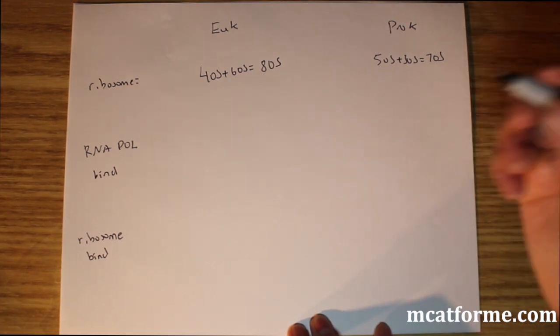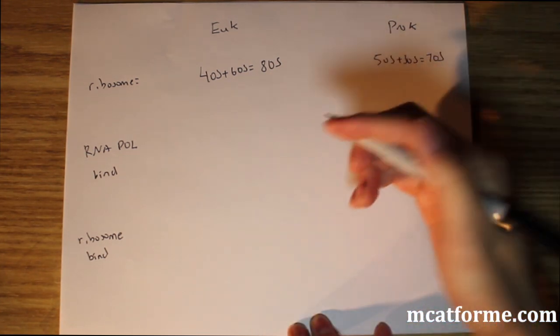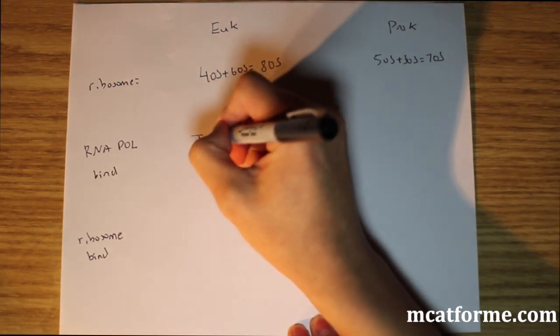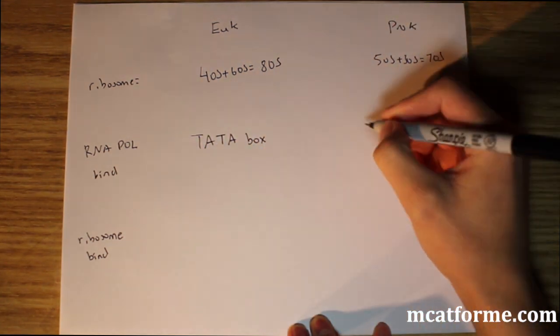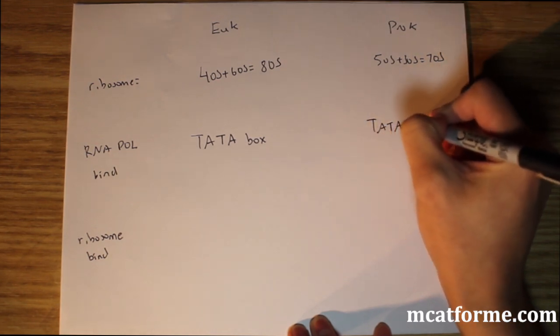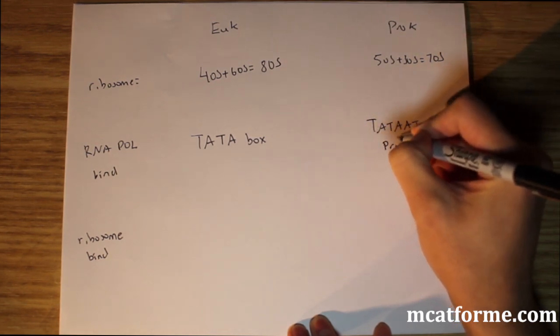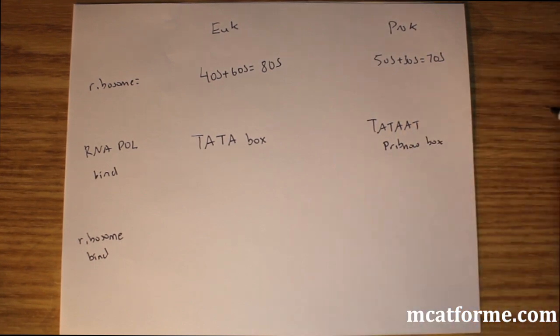Where does RNA polymerase bind? What does it look for to bind? It looks for the TATA box in eukaryotes. In prokaryotes, it's the TATAAT sequence, otherwise known as the Pribnow box. Nobody calls it TATAAT—they all call it the Pribnow box.